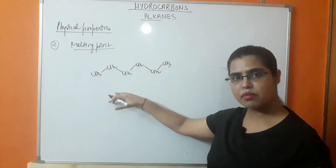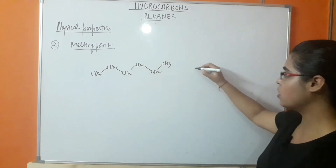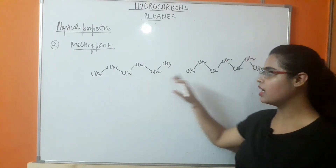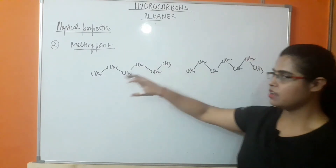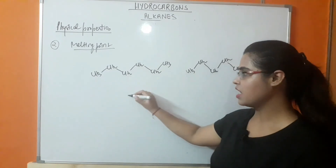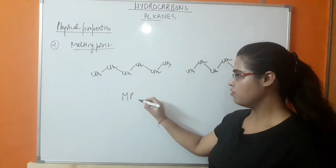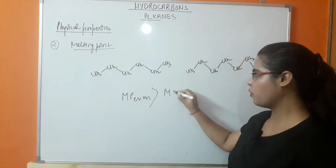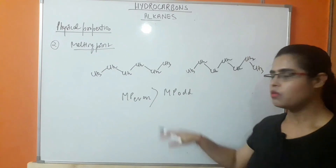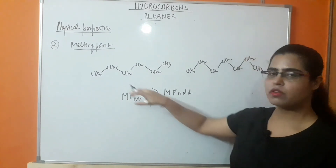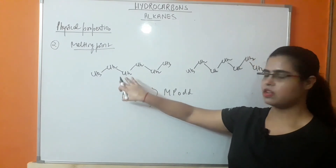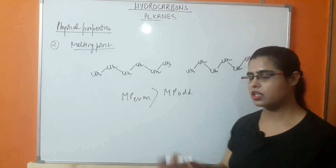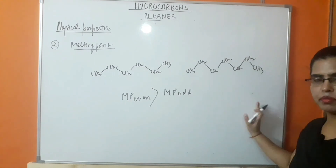Hexane is an example with an even number of carbons, whereas heptane has an odd number. Even number of carbons have a higher melting point than odd number of carbons. This is because the packing is much more efficient in the lattice structure for even carbon number alkanes compared to odd carbon number alkanes.